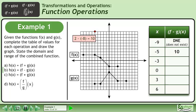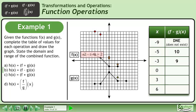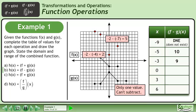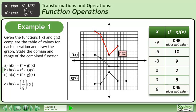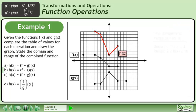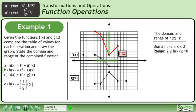Subtract the y-values of the next point to get 10, then the next point to get 9. Subtract the y-values of the remaining points and record the differences in the table. We can now draw the graph of h. The domain of h is between negative 5 and 3 inclusive. The range of h is between 2 and 10 inclusive.